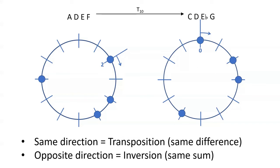Or if CDEbG is conceptually first and transformed into ADEF, you subtract 2 minus 0 and get T2. You can check your work by continuing to add or subtract corresponding pitches following the prime form's direction — subtracting 2 and 4 and so on to make sure that you're getting the same index of transposition.